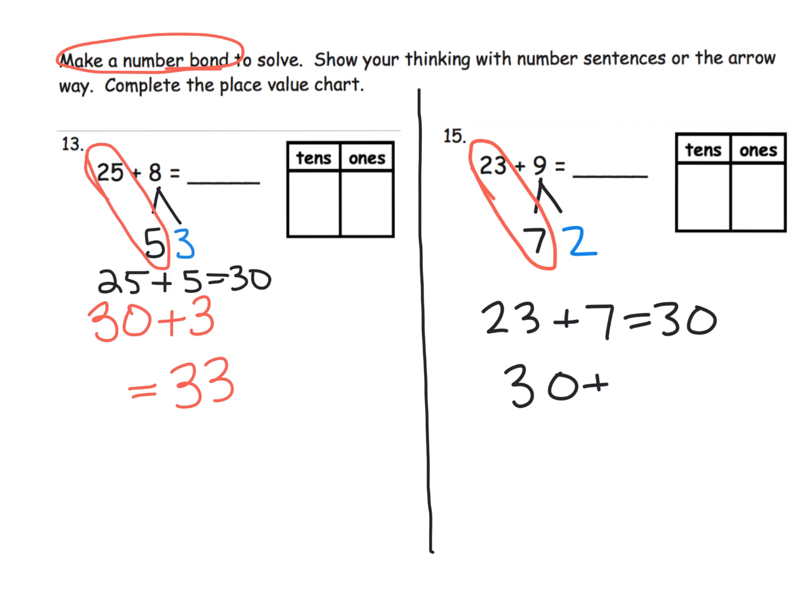So in both cases I forgot to write, fill in that place value chart. So how many tens do we end up with? We end up with three tens. How many ones do we end up with? We end up with two ones, so our answer is 32.